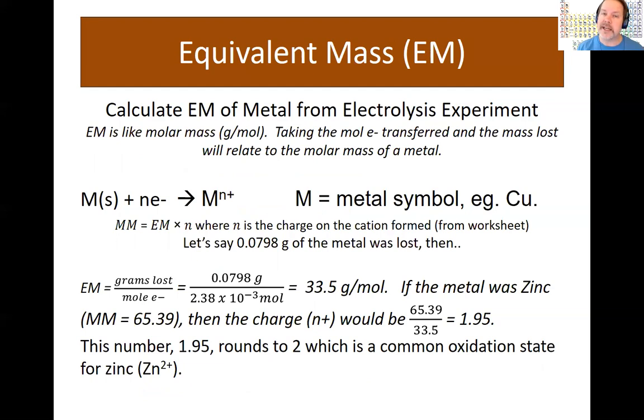So we need to take the grams that were lost in this experiment. A number of grams is related to the number of moles of electrons and thus moles of the metal that were transferred. So by taking the grams loss, let's say it's 0.0798 for this experiment, this is some experimental data from previous years, divided by the number of moles of electrons that transferred from our last experiment calculation, we can do this calculation to get a grams per mole or molar mass of the material.